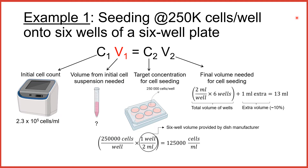Let's go through an example. In this example, we'd like to seed 6 wells of a 6-well plate with 250,000 cells per well. After removing the cells, lifting them, and having them at hand in suspension, we count the cell suspension to get C1, that is the initial cell count. The volume that we need to take from the initial cell suspension, V1, is unknown. We need to calculate C2, that is the target concentration for cell seeding.